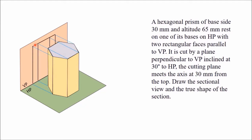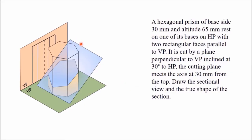When you look from the front, you will get one rectangular shape. Once you draw the top view and front view of this solid, you have to cut it by a plane perpendicular to VP, inclined at 30 degrees to HP, and meeting the axis at 30 mm from the top. This section plane is inclined at 30 degrees to HP and perpendicular to VP. Therefore, when you look at this plane from the front, it will appear as a line in the front view.